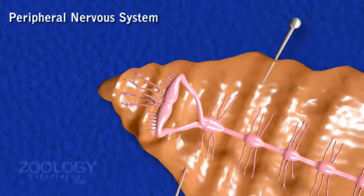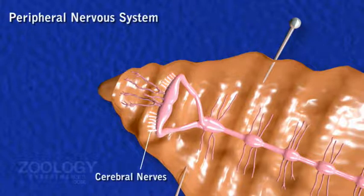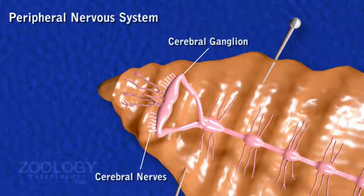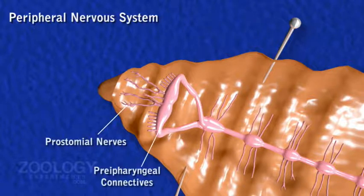Peripheral Nervous System: Laterally, eight to ten nerves arise from each cerebral ganglion, which enter the prostomium and buccal chamber. Nerves from the peripheral connectives supply the peristomium.